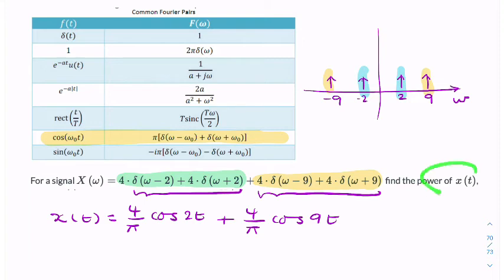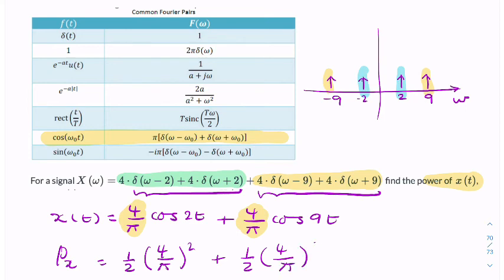And the question is, find the power of x of t. So to find the power of a sine wave, you would take the amplitude, you would square it, and you would divide by two. And if you have more than one, you can just add those powers. So the power of x is simply half 4 over pi squared, plus half 4 over pi squared. That's just 16 over pi squared.